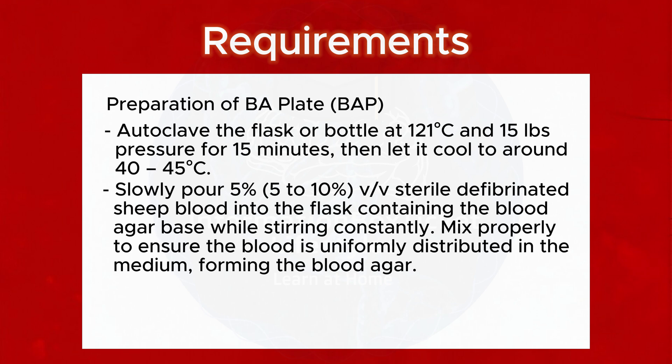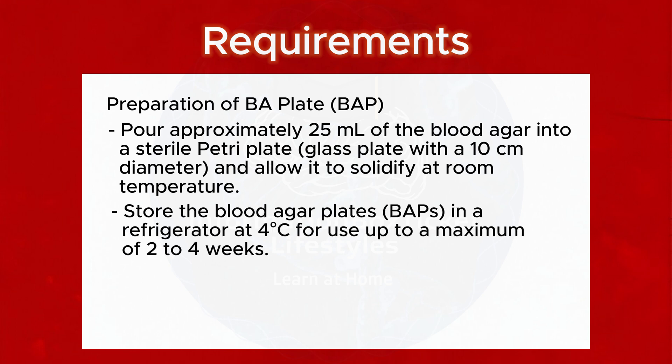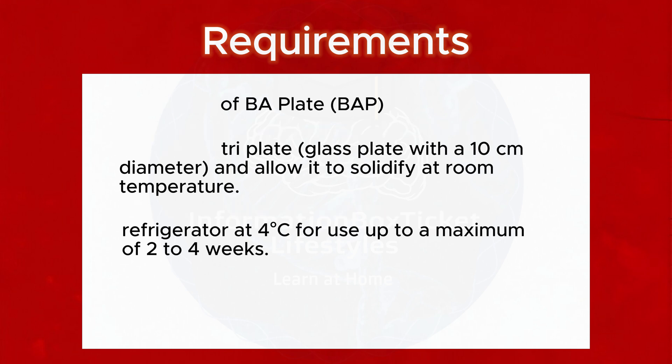Mix properly to ensure the blood is uniformly distributed in the medium, forming the blood agar. Pour approximately 25 milliliters of the blood agar into a sterile petri plate — a glass plate with a 10 cm diameter — and allow it to solidify at room temperature. Store the blood agar plates (BAPs) in a refrigerator at 4°C for use up to a maximum of 2 to 4 weeks.